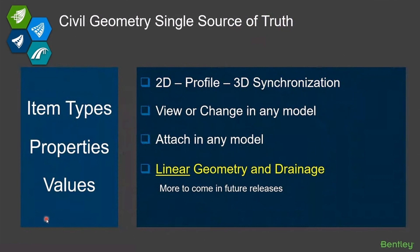A big part of making item types functional in the civil environment is something that we call single source of truth. Something that exists in the civil environment that does not exist in the pure MicroStation environment is that we work in multiple models at the same time — 2D models, profile models, 3D models — and we have to keep some synchronization between those. You do not want your curb line in your 2D model and your curb line in the 3D model to have two different item types. That's what we refer to as single source of truth, and we do have that implemented.